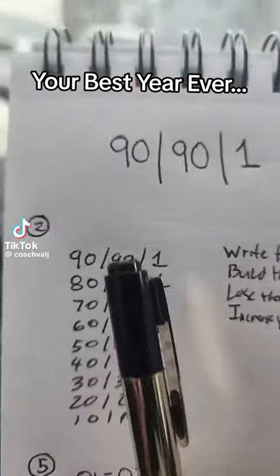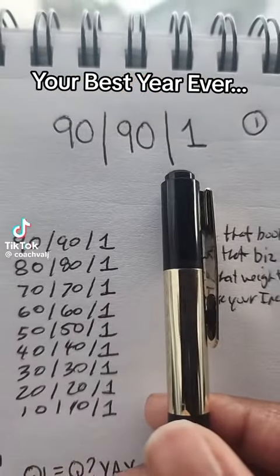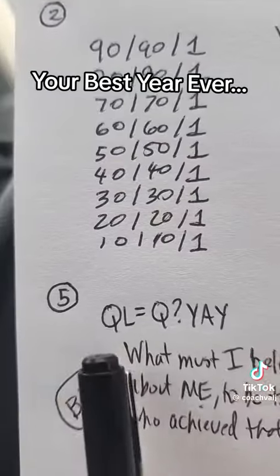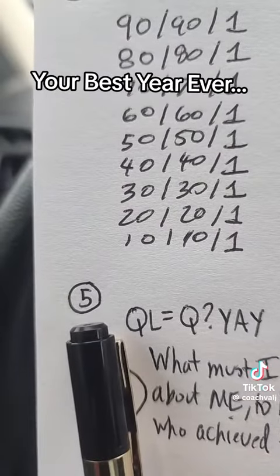Your best year ever has a formula. I'm sure you've seen the 90-90-1 rule by Robin Sharma. This video has five steps, so make sure you save it.